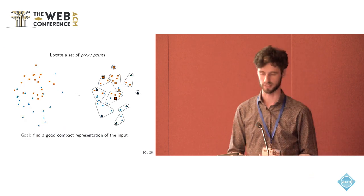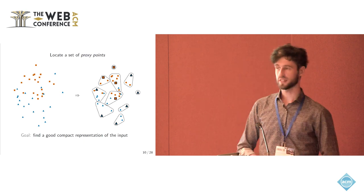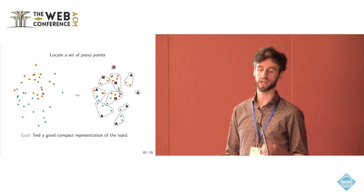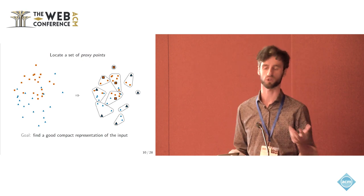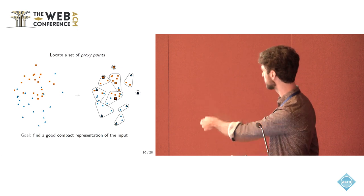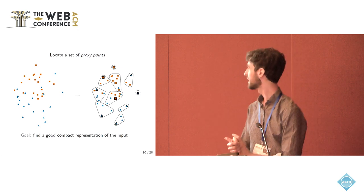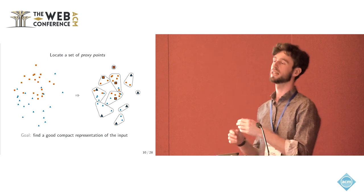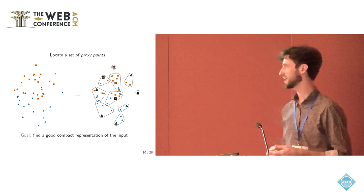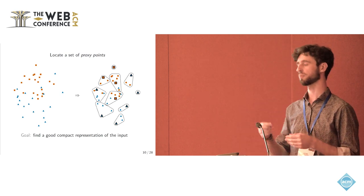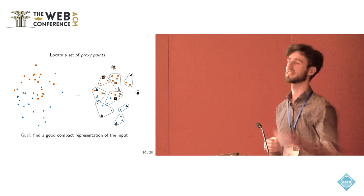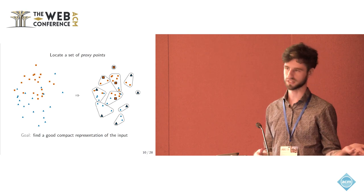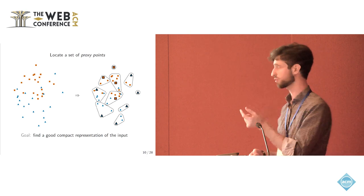So just to illustrate the idea, on the left hand side you have the input set of points, again with two different colors. The first step is to locate a set of proxy points. Let's assume that you start from an arbitrary point like the topmost square. Then there is a greedy algorithm, a very classic greedy algorithm, that basically requires you to pick an arbitrary point, then the farthest away, and then the farthest away from the selected ones, and so on and so forth until you get either the desired number of clusters or a radius small enough.